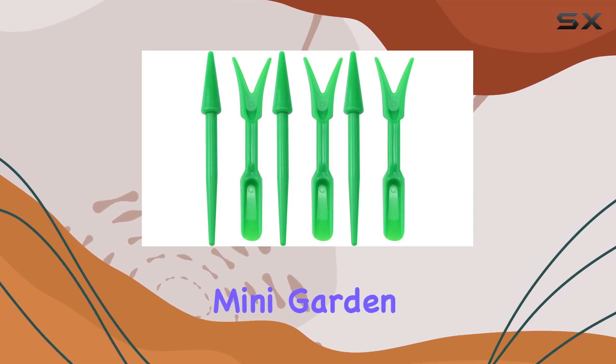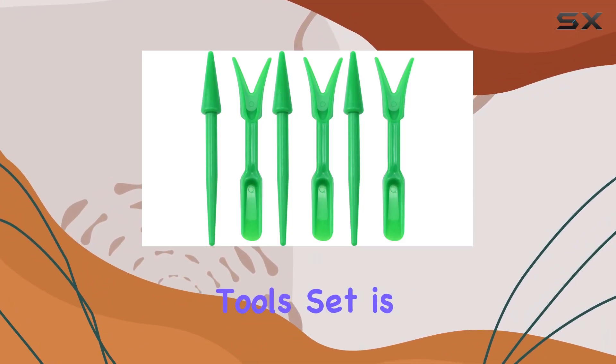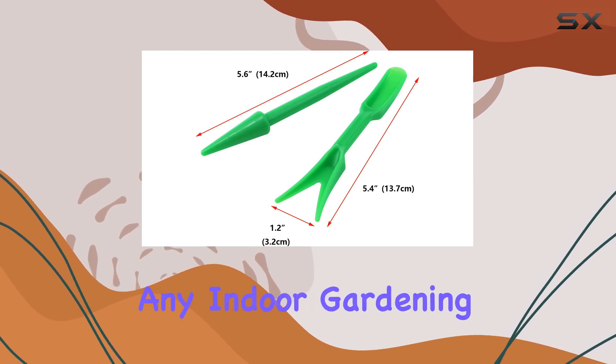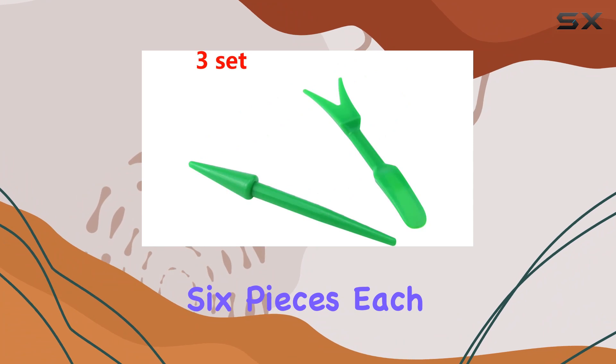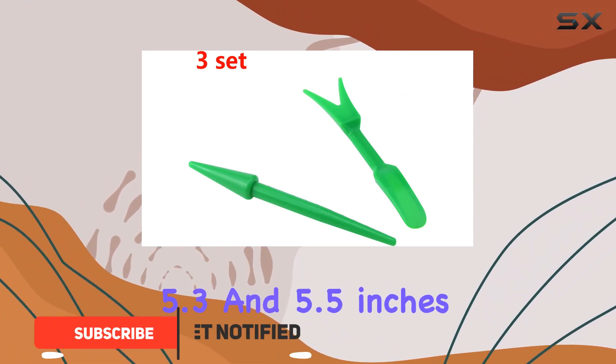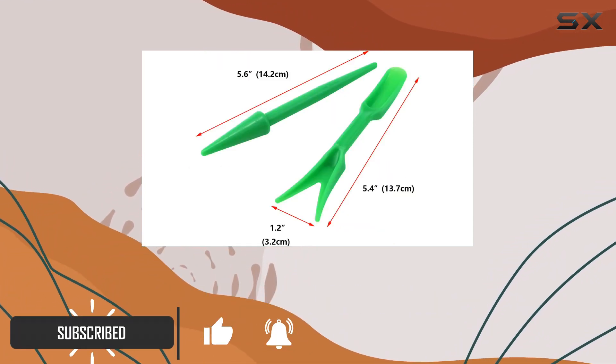The Antrader Mini Garden Hand Succulent Transplanting Tool Set is an excellent addition to any indoor gardening tool kit. This set includes six pieces, each measuring between 5.3 and 5.5 inches in length.